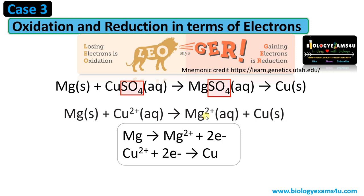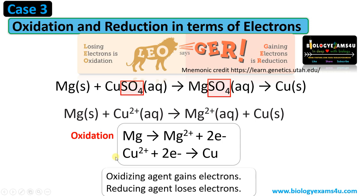Always remember: giving is a positive thing, so whenever an ion gives electrons it becomes positively charged. Magnesium donates electrons and becomes Mg²⁺. Similarly, on the other side, Cu²⁺ receives two electrons from magnesium and becomes Cu. So oxidation is loss of electrons — Mg becomes Mg²⁺, it loses electrons. Whereas Cu²⁺ becomes Cu, it gains electrons, so that reaction is reduction. As you see, both oxidation and reduction reactions are coupled.